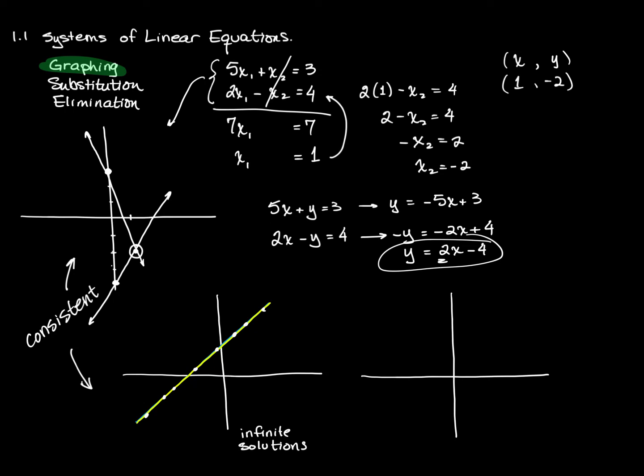The other possibility is that you have a system where one of the lines maybe looks like this, and another one of the lines looks like this. These lines are in fact parallel. And so they never intersect. This kind of system we call an inconsistent system. And it has no solutions.